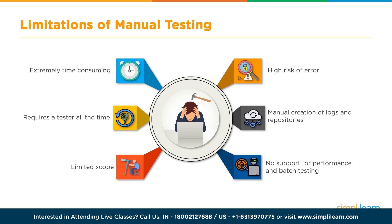The scope of manual testing is also limited. For example, in regression testing you won't have the luxury of time to execute all test cases, so you pick and choose — limiting the scope. Working with large amounts of data manually is impractical, and performance testing that simulates multiple loads is not feasible manually. In an Agile model where code is continuously churned out, running tests multiple times in each iteration becomes very tedious.